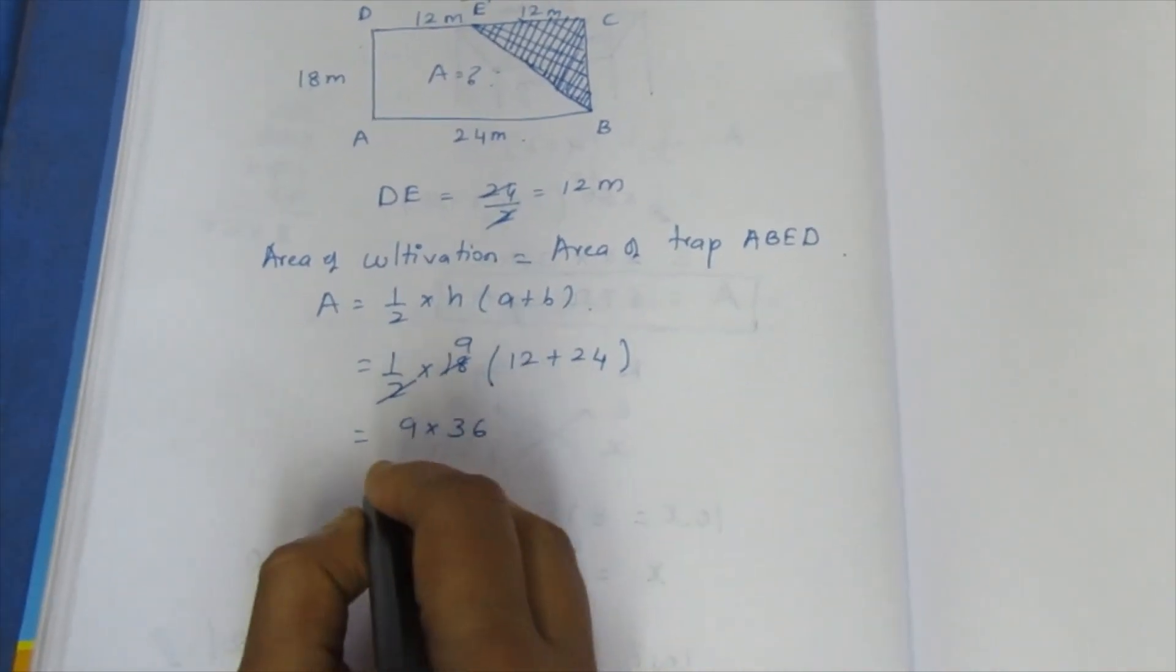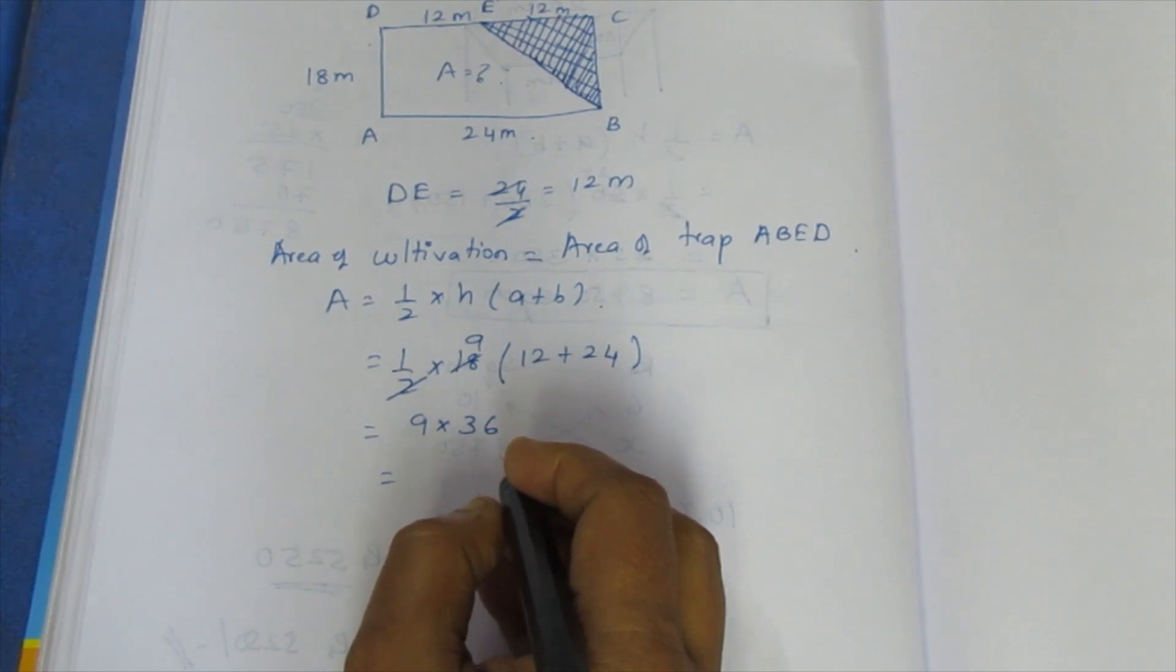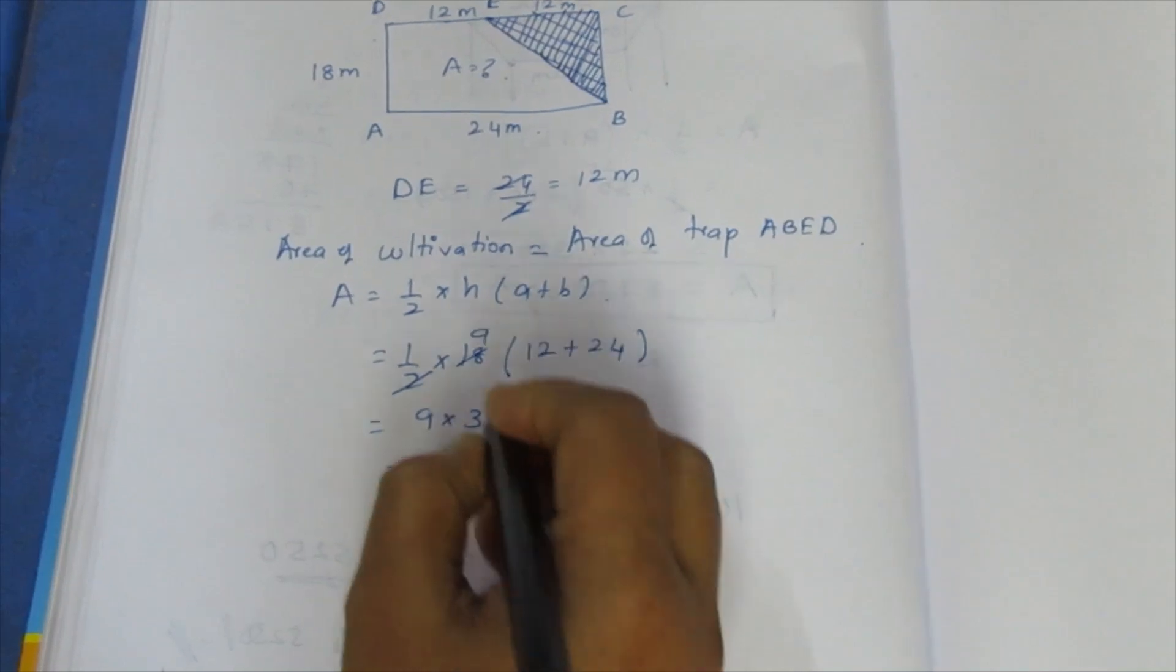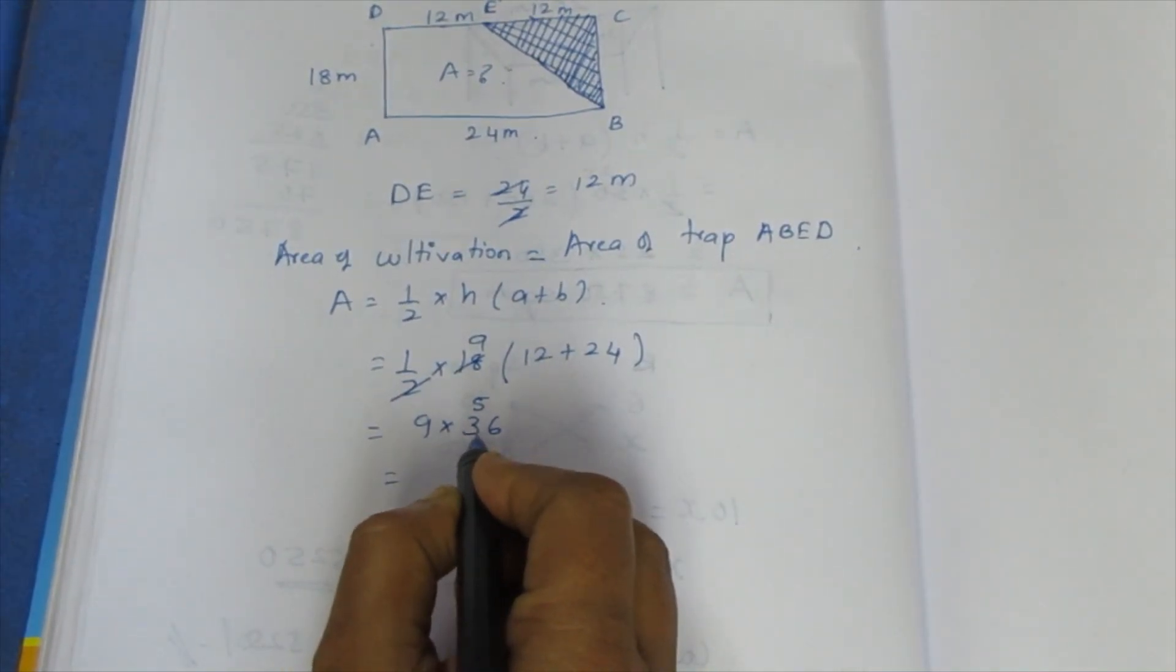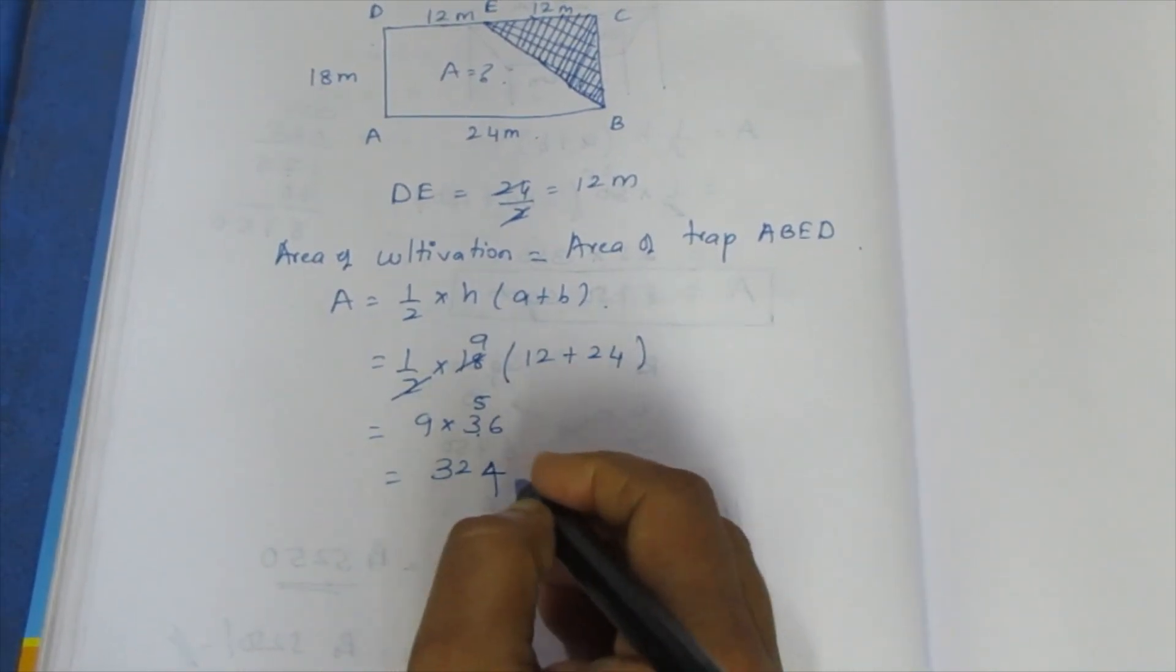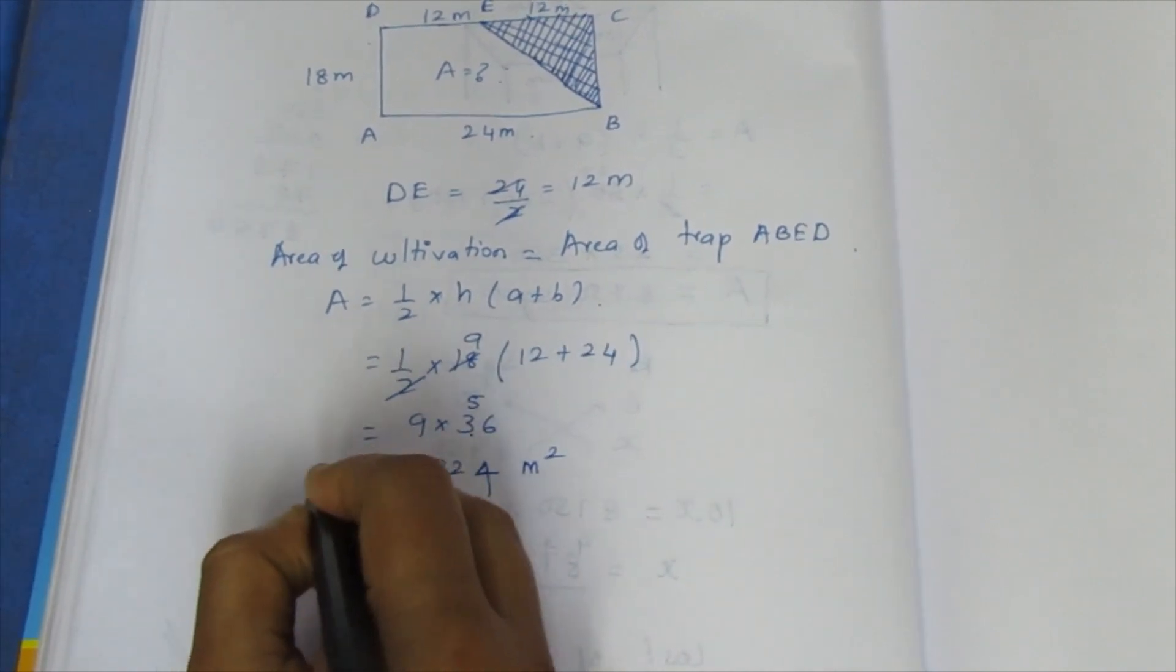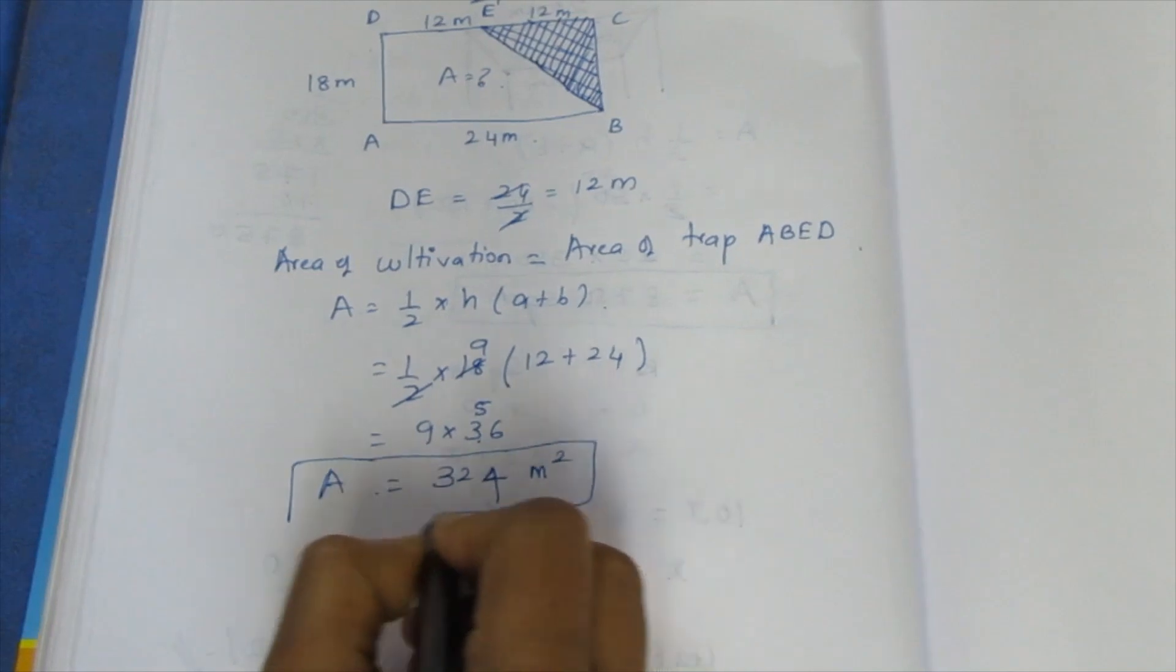9 times 6 is 54, 9 times 3 is 27, plus 5 is 32, so 324 meter square. This is the area of the cultivation land - 324 meter square.